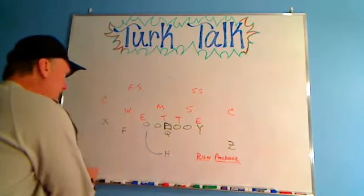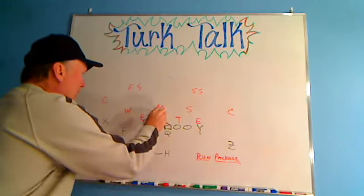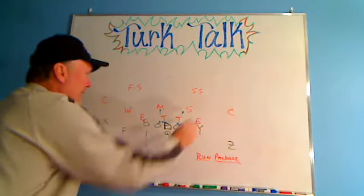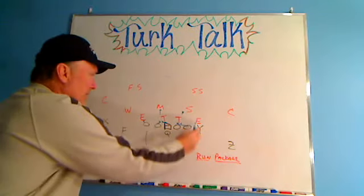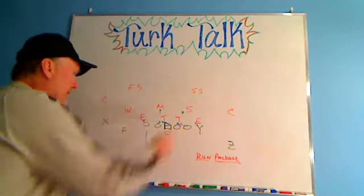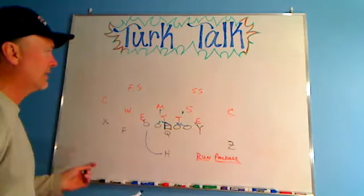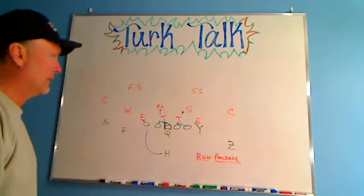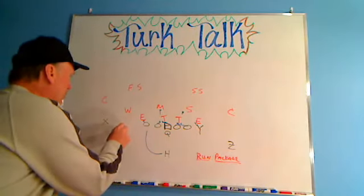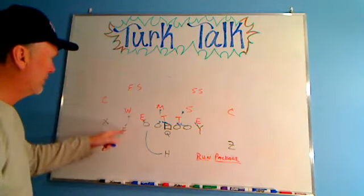That's a situation where we run the blunt. We run zone: guard and center are working up to the Mike, tackle and guard pushing him, working to the Sam. The tight end has the tough block, especially if he's in a seven technique on the inside of the tight end. If the halfback has to cut back, that guy's got to make that block. The QB can get up there, call his cadence, and go — the look is good. The F has to be in position to block the Will.